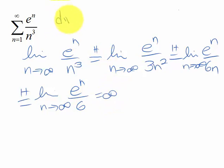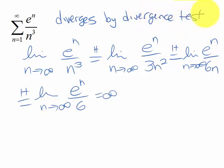And remember the divergence test basically says if the limit as n goes to infinity of the terms is not 0, then the series diverges.